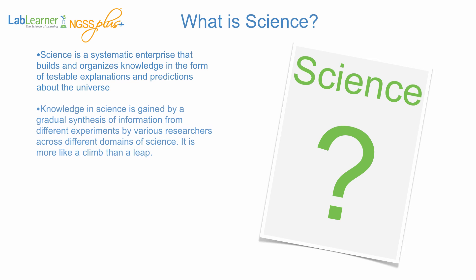Knowledge in science is gained by a gradual synthesis of information from different experiments by various researchers across different domains of science. It's more like a climb than a leap — in other words, it's a continual process. And this is something when we teach science, we need to project to our students. Science is not just one experiment or one project; every experiment builds on what was previously learned and will become a building block for the next question or experiment.